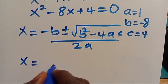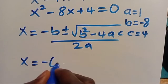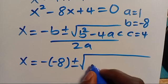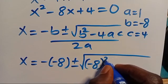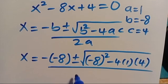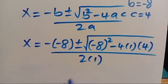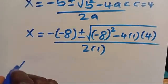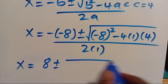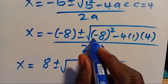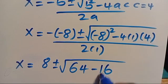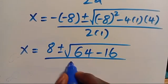When we substitute, we have X equals negative of negative 8, plus or minus root of negative 8 in parenthesis to the power of 2, minus 4 times A which is 1 times C which is 4, divided by 2 times 1. So negative times negative gives us plus 8, and negative 8 squared gives us 64, minus 4 times 1 times 4 gives us 16, divided by 2.